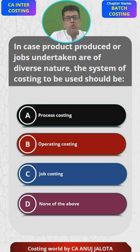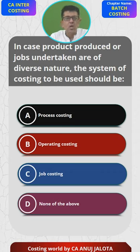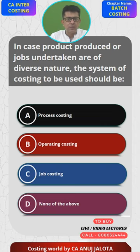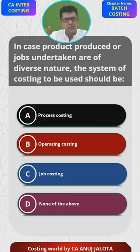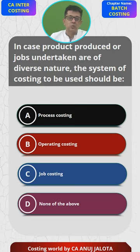You will follow something called job costing. Process costing is followed whereby all the goods pass through different stages. Operating costing is followed whereby the company is in a service sector like hotels, hospitals, transportation, etc.